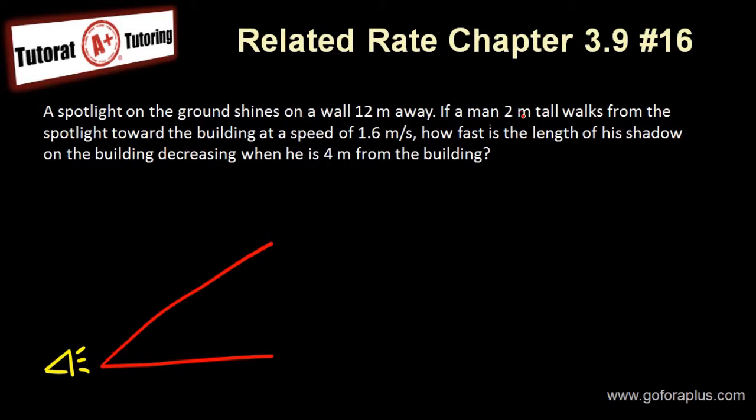With a man that is 2 meters tall walk from the spotlight toward the building at a speed of 1.6 meters per second. So let's say I have a person that is 2 meters tall, and the spotlight is actually 12 meters from the building. So here I have my person at x distance from the spotlight, and the height of the shadow is y.